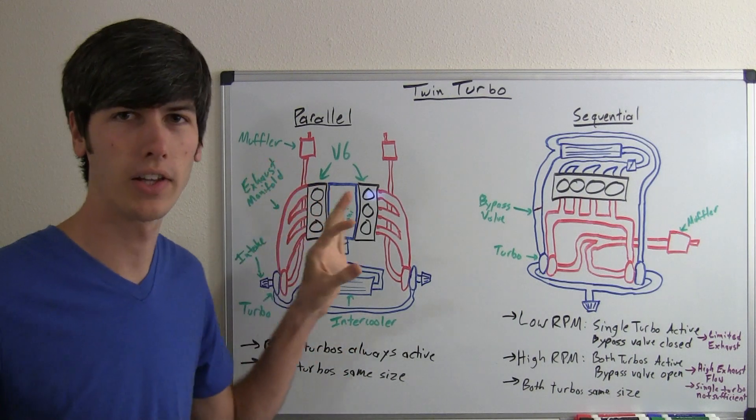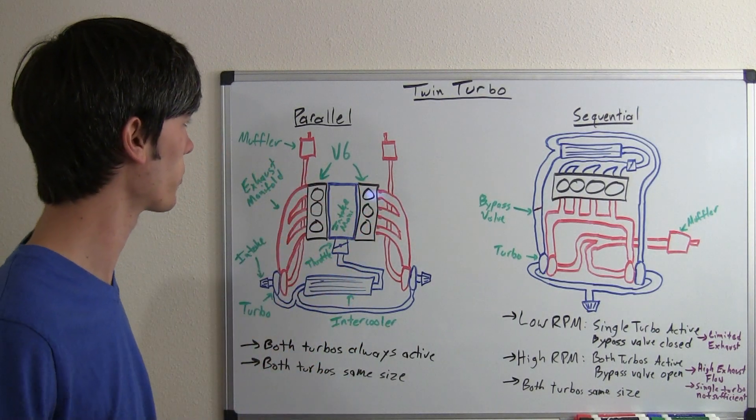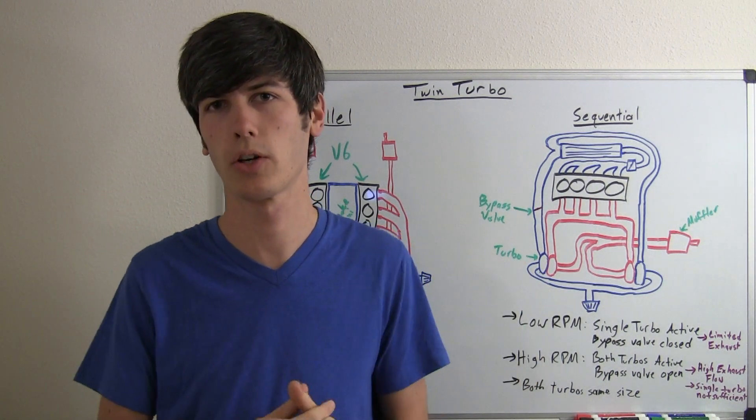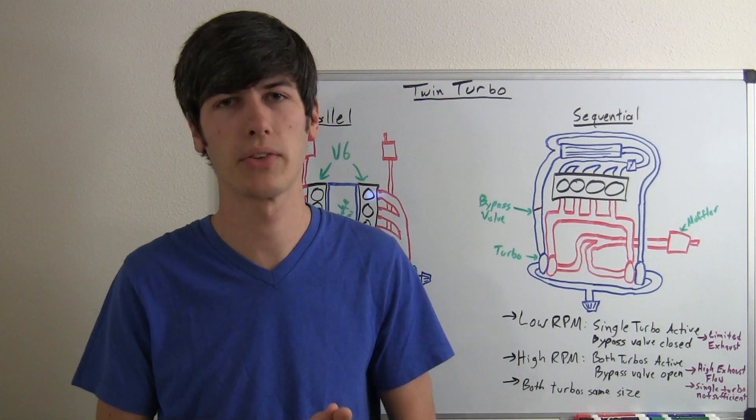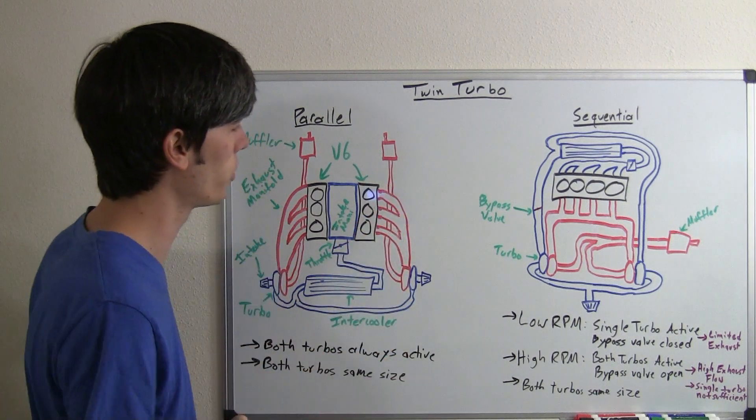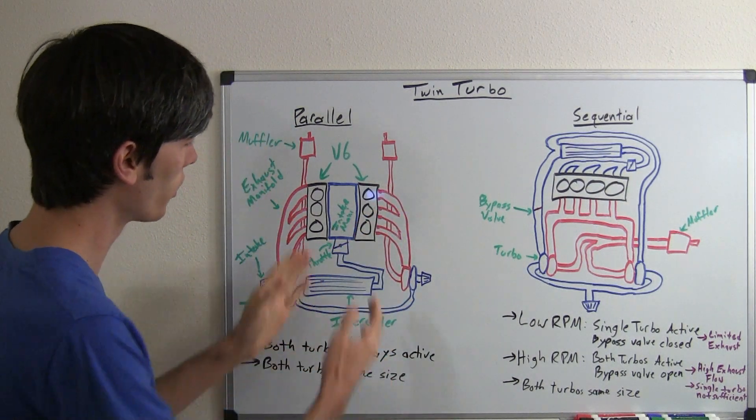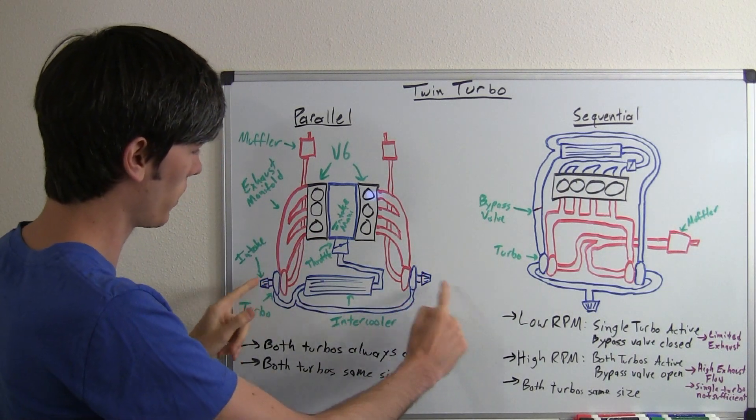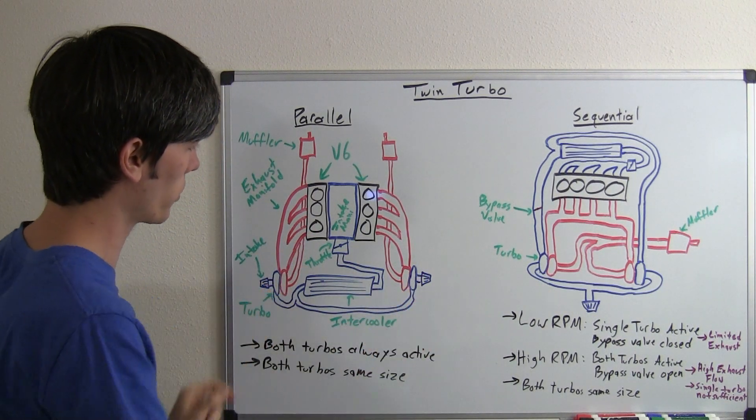So, the first and the most simple setup to understand is parallel, and basically all you're doing is you're having two separate turbochargers for two separate cylinder banks. So it's almost like you've got two separate turbocharged engines. So here we've got a V6, you can see the cylinder banks, and you've got your two intakes. So here's your two turbochargers.